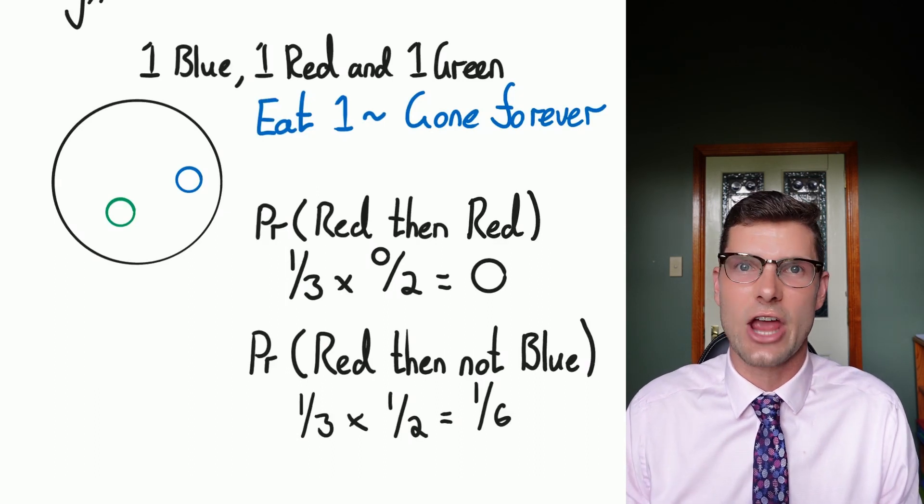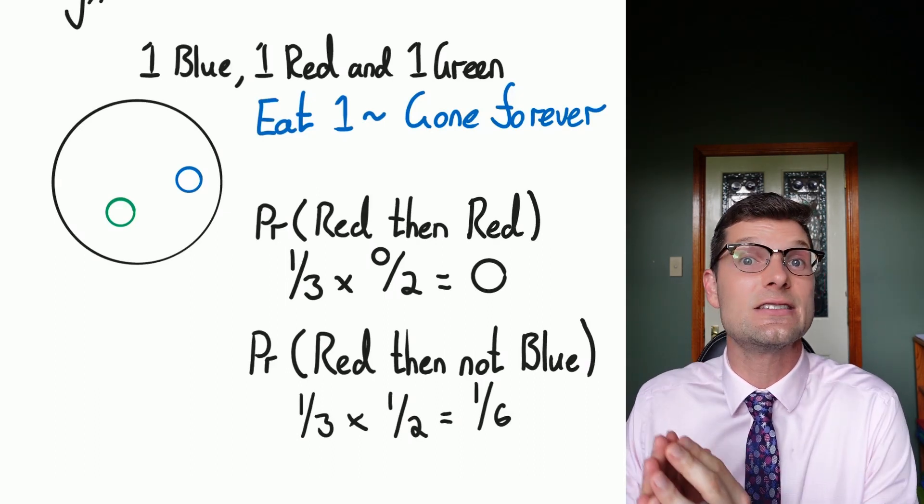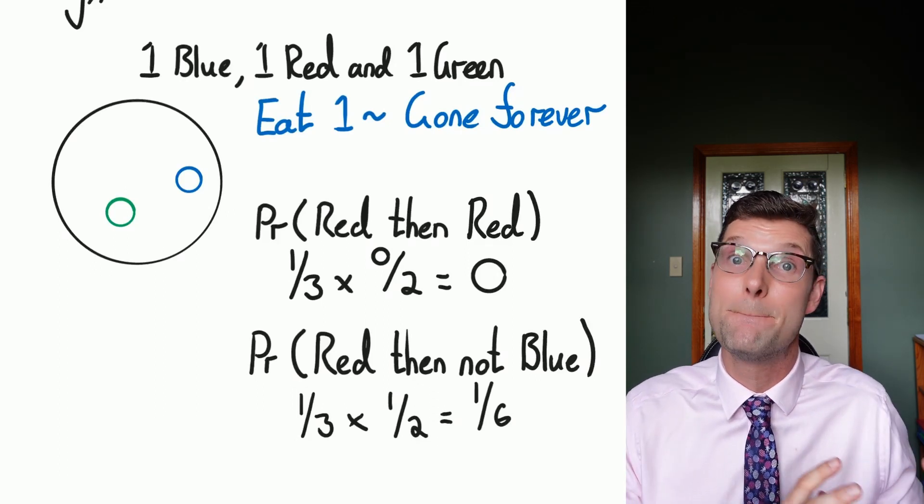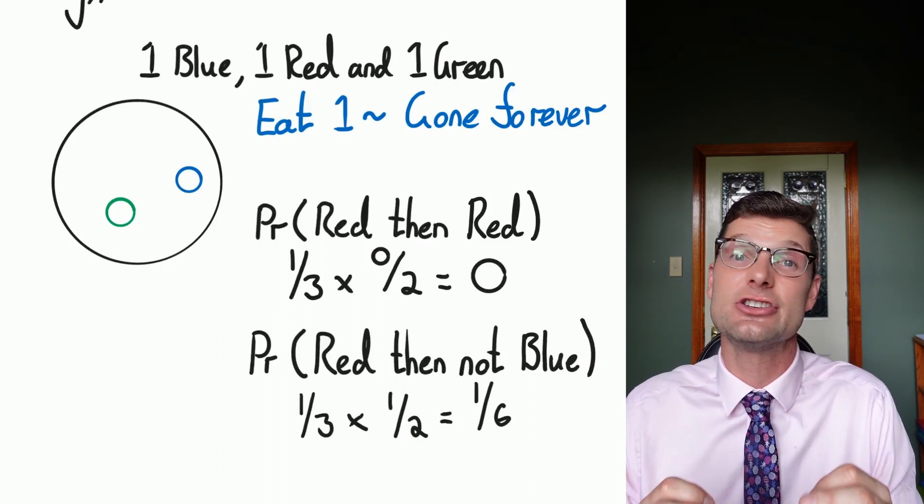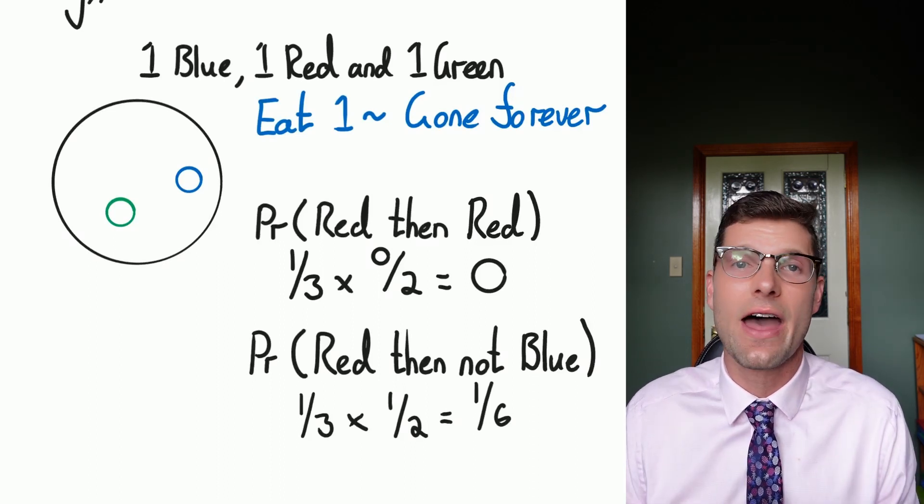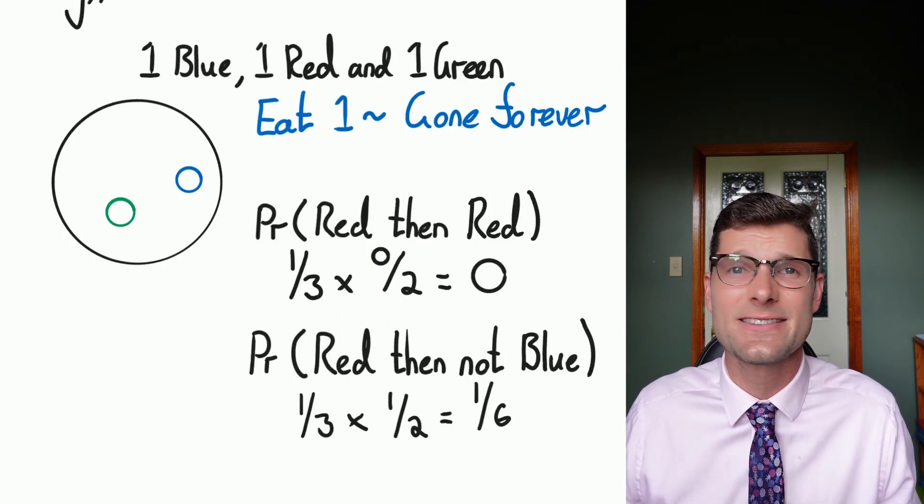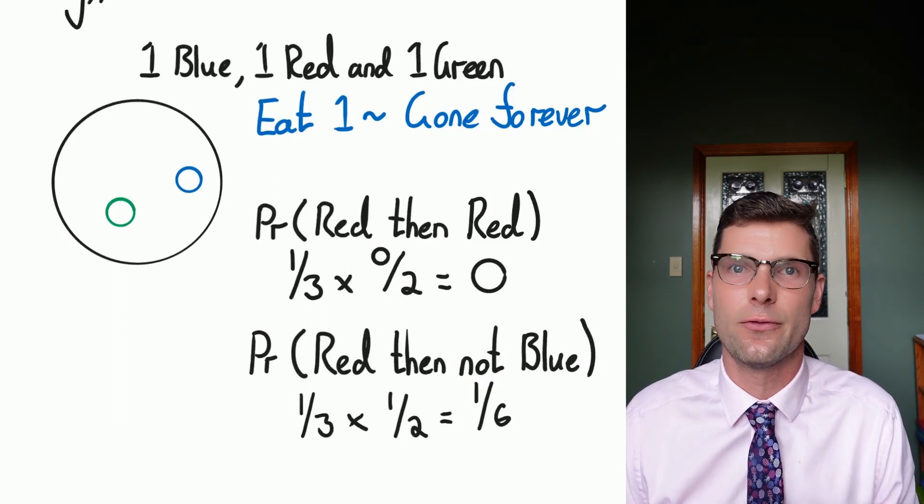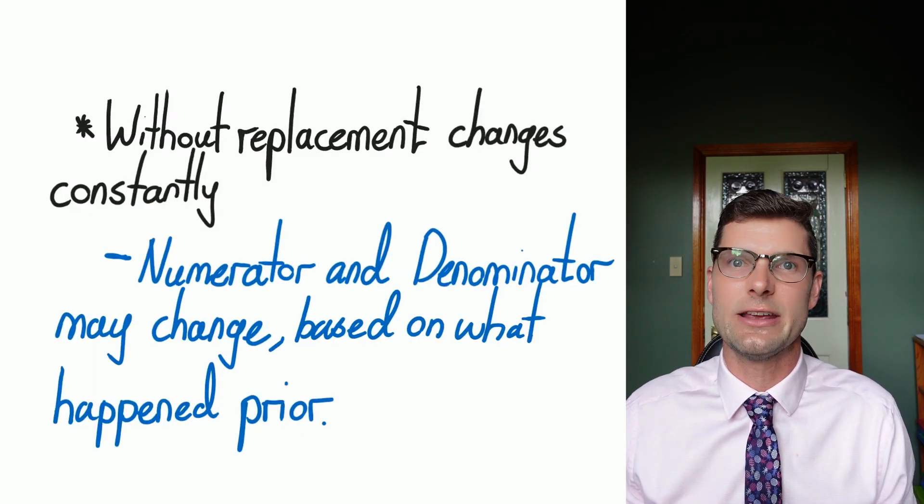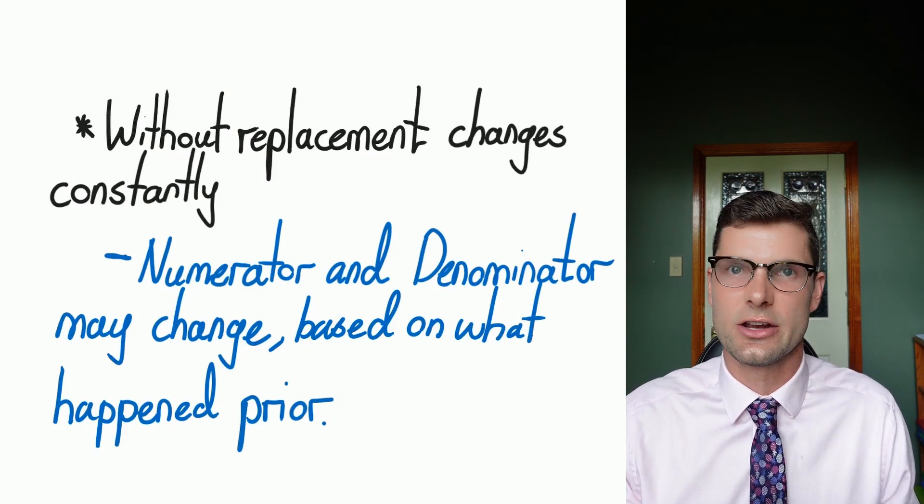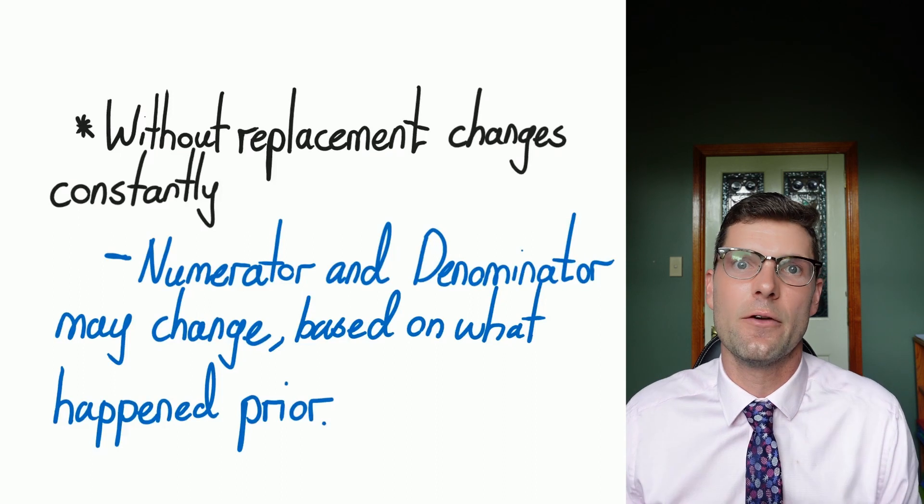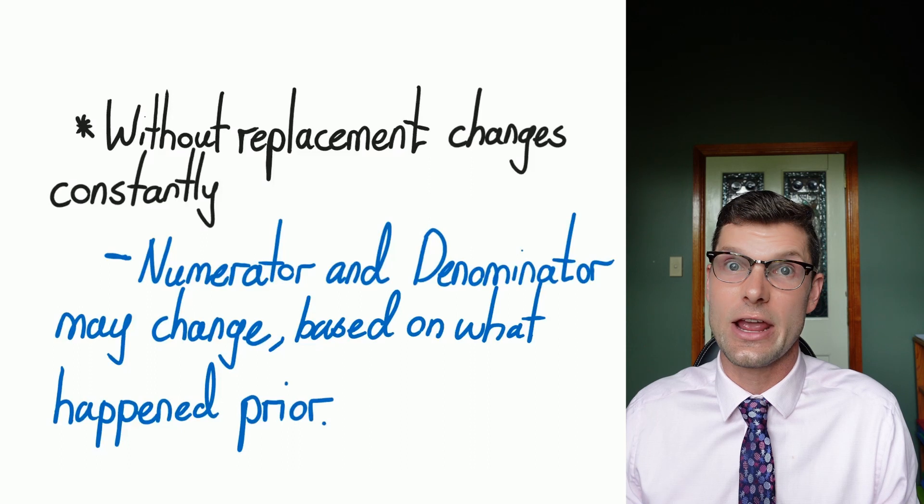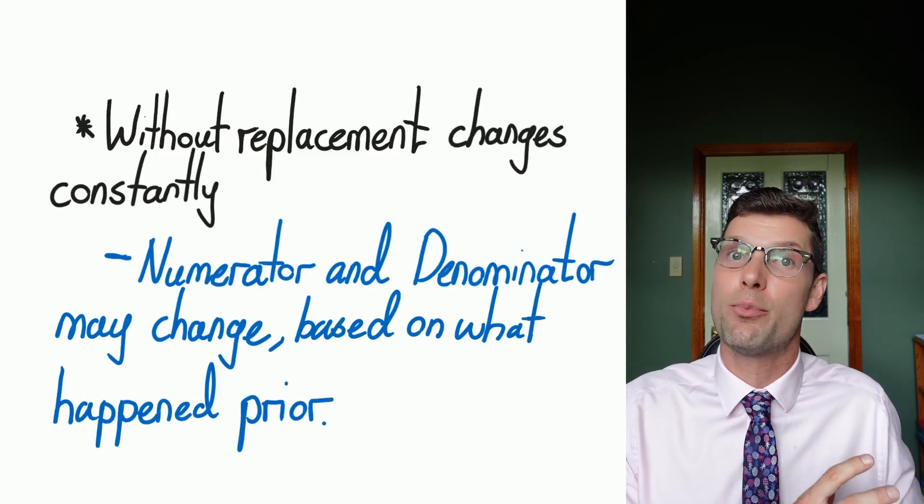So the thing that really changes here, the thing that you've got to be on top of is that the second step or the probability of B will change because of what happened in the first one. And it's going to change every single time. If you're aware of that, you're going to find these super easy because the maths doesn't change at all. It's still just probability times probability equals full marks. The denominator or the bottom number of your fraction will always change in this situation, and the numerator might change based on what you're actually looking for and what previously happened.